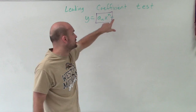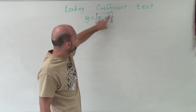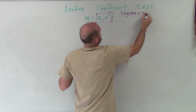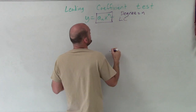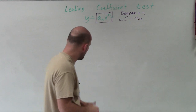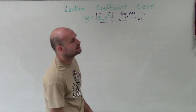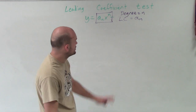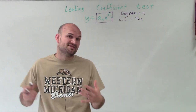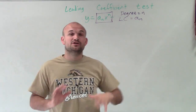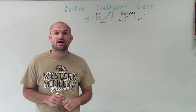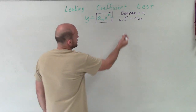Our leading term has a degree equal to n, and the leading coefficient is equal to a sub n. When determining the leading coefficient test, we look at the degree and the leading coefficient of our polynomial — making sure it's in descending order first — and then we investigate to determine what our end behavior is going to be.